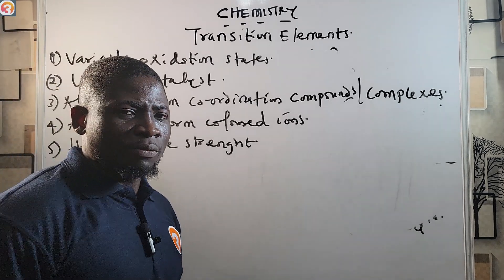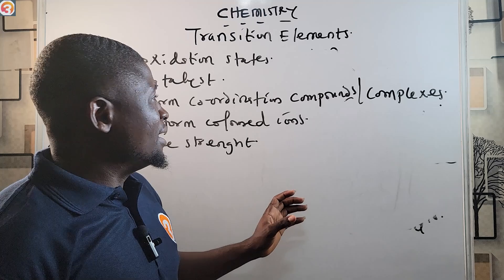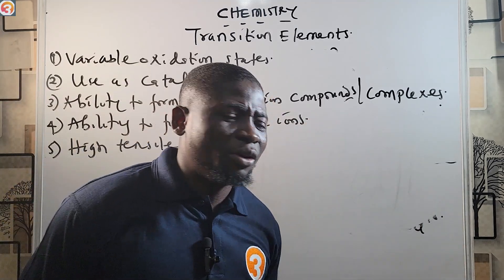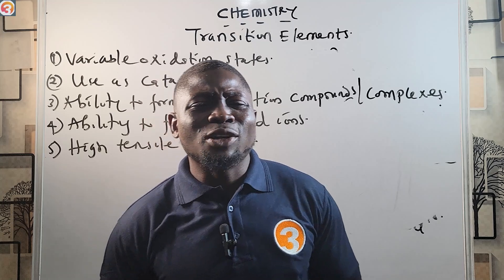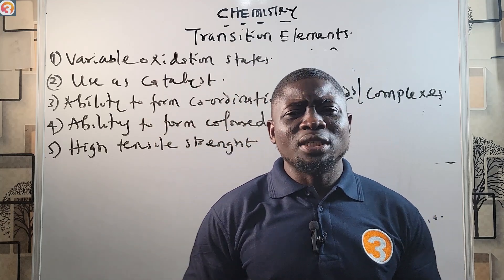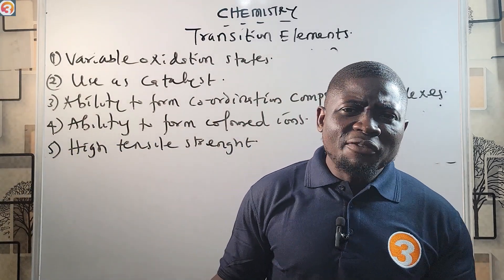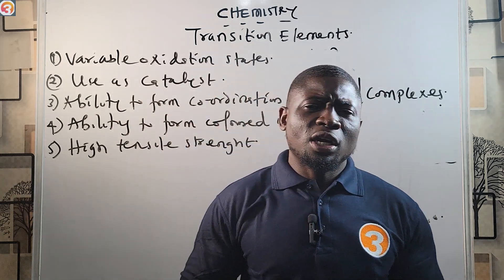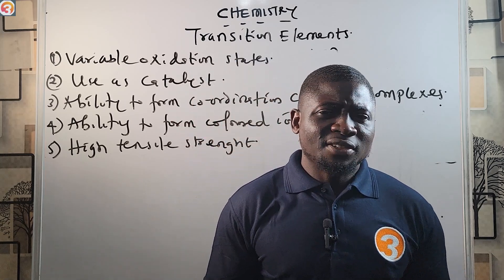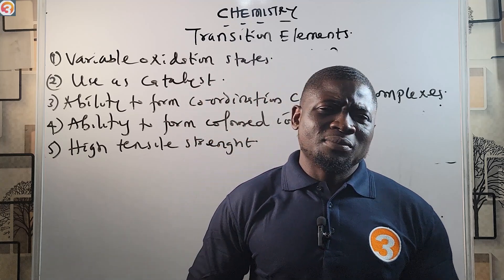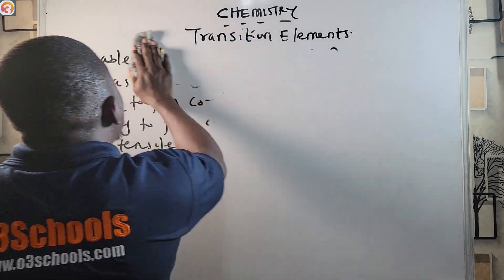So if you are asked the reason behind transition elements having high tensile strength, ability to form colored ions, being used as catalysts, or having variable oxidation states — the reason is because the d orbitals of the transition elements are mostly incomplete. Now let's look at the first 10 transition metals — their group distribution, atomic numbers, and electronic configurations.